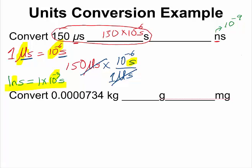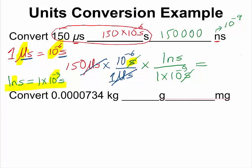Now I can make use of that as a conversion factor, writing it in such a way that seconds will cancel out. So 1 times 10 to the negative 9 seconds equals 1 nanosecond, and written like this, seconds cancel out. Therefore, all I need to do is use my calculator to complete the rest. My calculator gives me 150,000,000 nanoseconds.